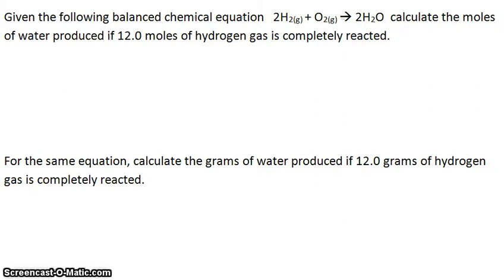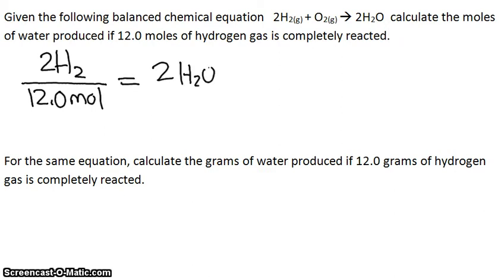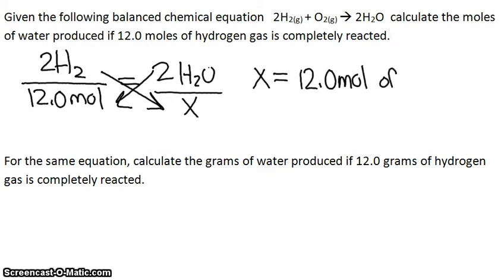So our question is already in moles, so we're going to skip step 1 of converting it to moles. So we have 2H2, and you put that over the 12.0 moles, and it's equal to 2H2O over X, because we're trying to find the number of moles. So you do cross multiplication, and you get that X is equal to 12.0 moles of H2O.